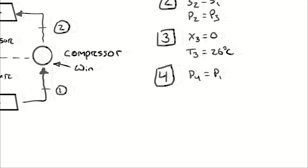Note that in Rankine cycle analysis, a shortcut exists for getting from state 1 to state 2 that relies on analyzing a pump operating with a compressed liquid. That shortcut cannot be used here — we have a compressor working primarily with vapor, which is not incompressible.